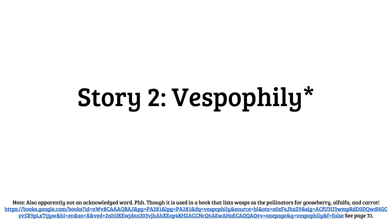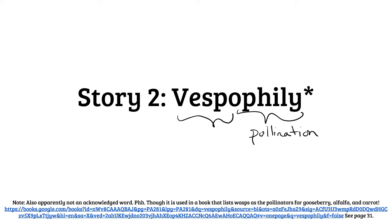Apparently Google doesn't consider this a word, but it's definitely a word. I heard it in an ecology class where we were talking about trillium, because trillium is pollinated by wasps. You might recognize the root word 'philly' from talking about different types of pollination syndromes — philly means pollination. And 'vesp' — think about a Vespa — that means wasp. So vespaphily means wasp pollination.